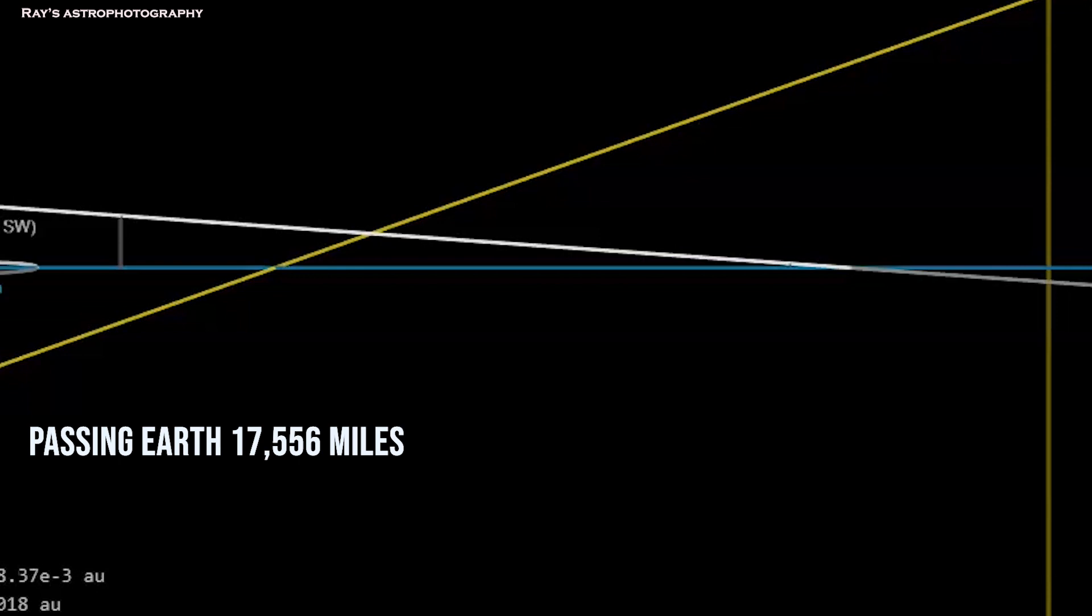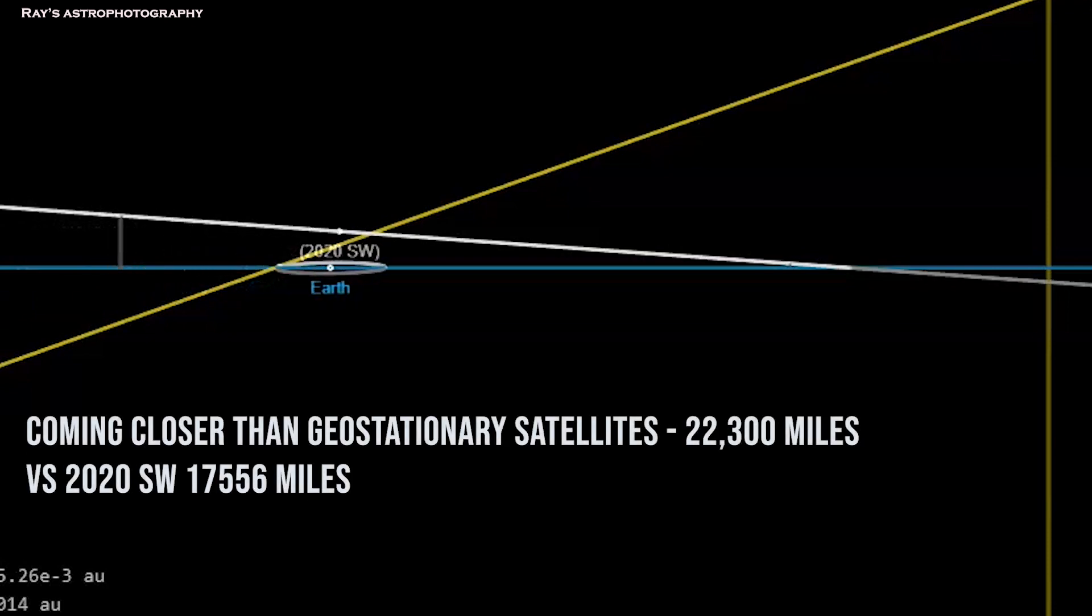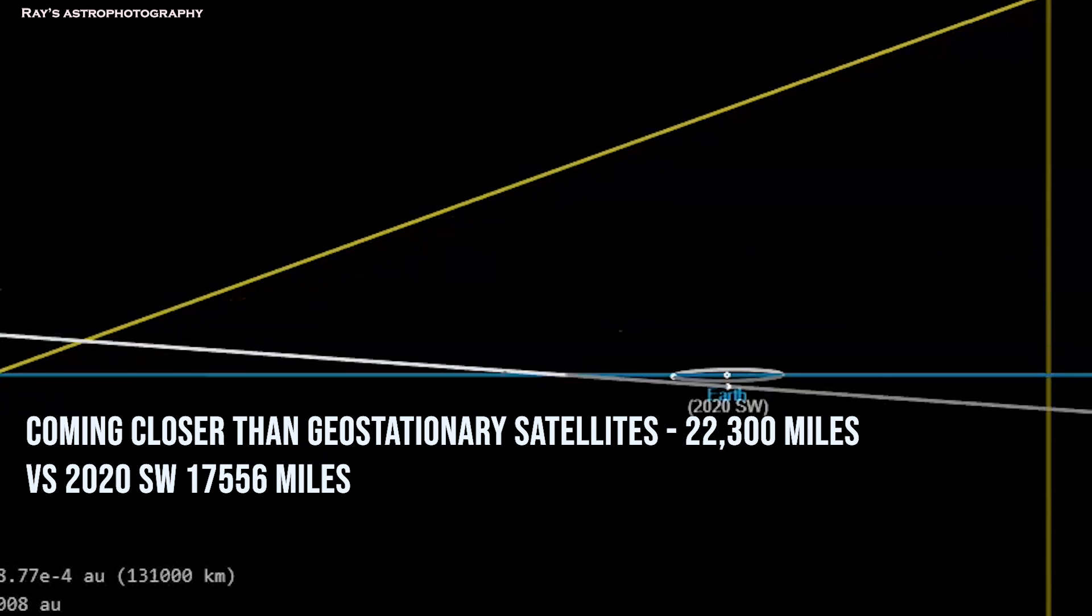It is not going to hit us, but it will come closer than the geostationary satellites, the GPS satellites that we have. GPS satellites are roughly around 20 to 23,000 miles, whereas this one is coming at 17,000 miles closer to the Earth.